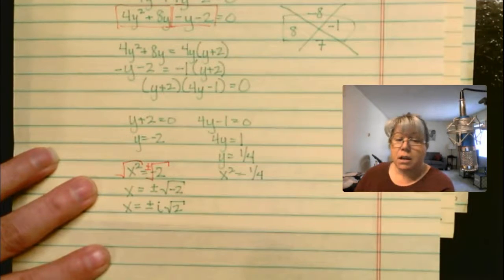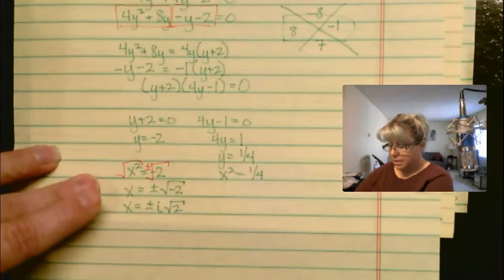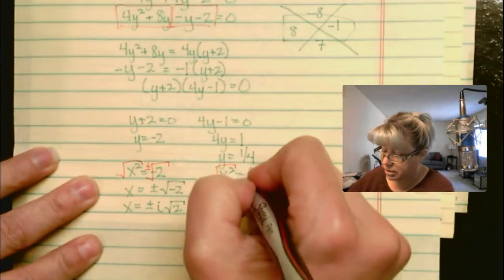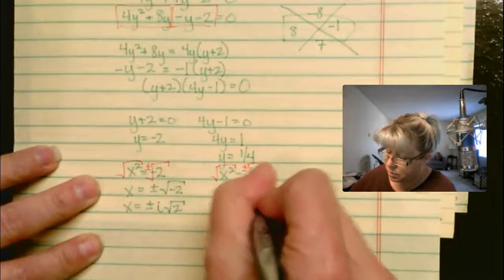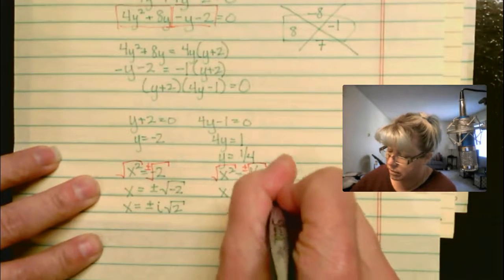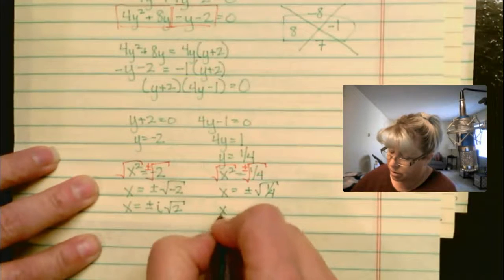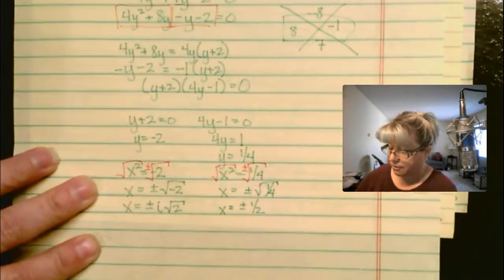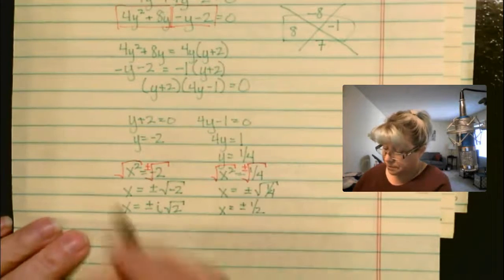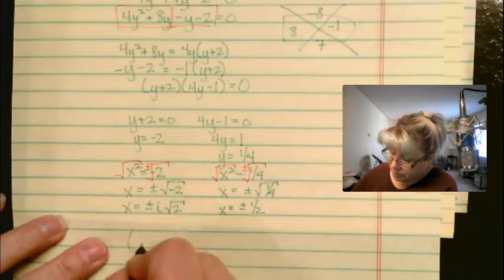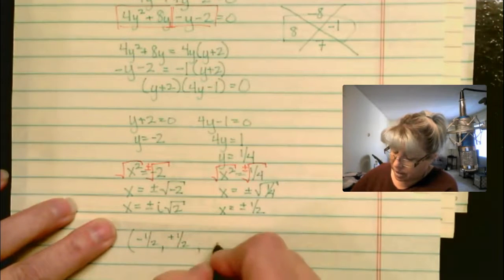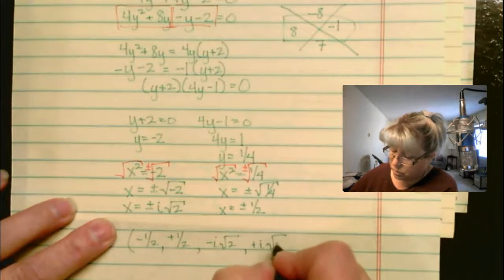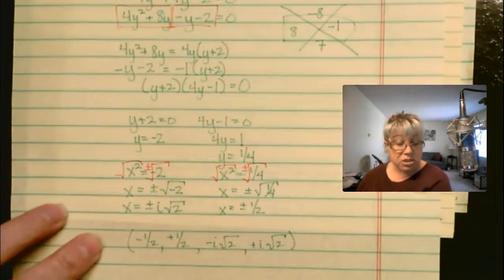Now let's do the same for our other possible solution. Taking the square root of both sides of x squared equals 1/4, the right-hand side is plus or minus, giving x equals plus or minus the square root of 1/4. But the square root of 1/4 is 1/2. So we actually have four possible solutions: x can equal negative 1/2, positive 1/2, negative i root 2, or positive i root 2.